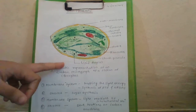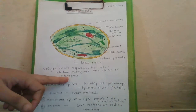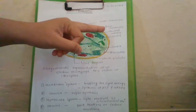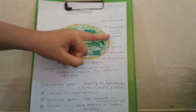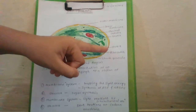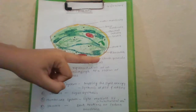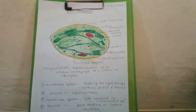This is a diagrammatic representation of an electron micrograph of a section of a chloroplast. The labeled parts include: outer membrane, inner membrane, stromal lamella, grana, stroma, ribosomes, starch granules, and lipid droplet. We will see this diagram in detail.